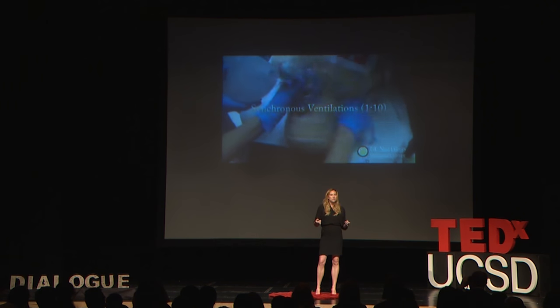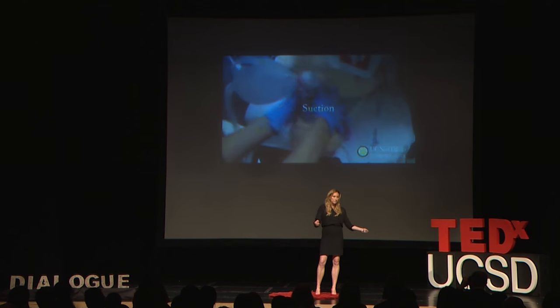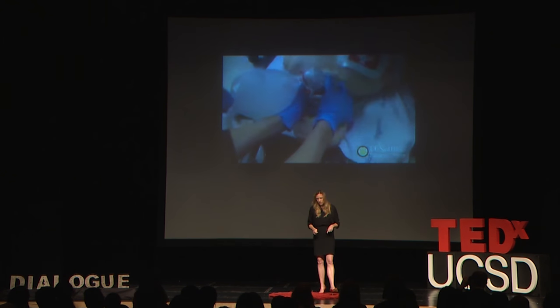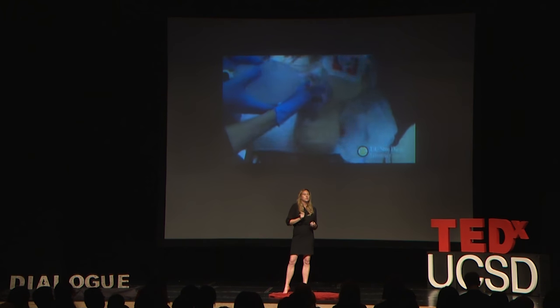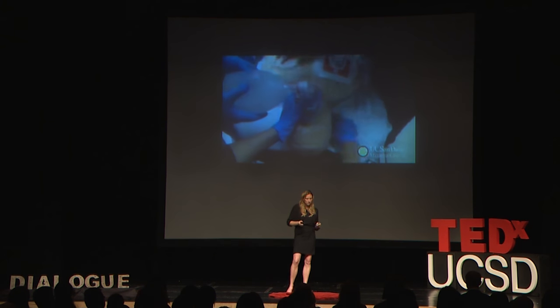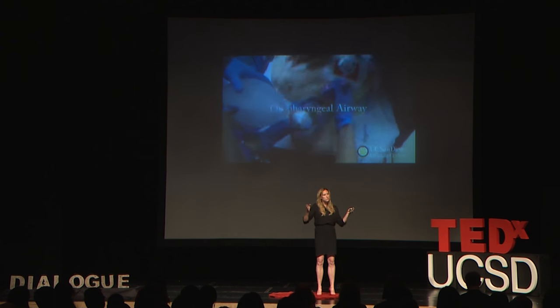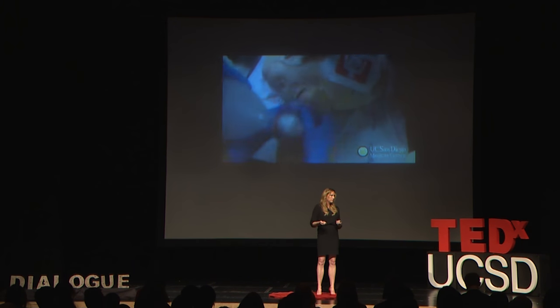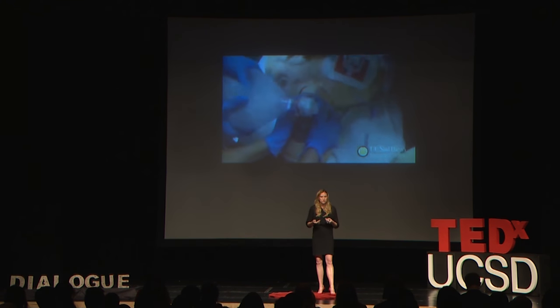Also part of circulation are lines placed in the patient's limbs, as well as their neck, and sometimes even their bone. These lines deliver fluid, blood, and special medications that centralize blood flow and cause the patient's heart to beat rapidly. The last part of circulation are defibrillator pads placed on the patient's chest, which can send electricity through the heart in an attempt to reset the electrical system — kind of like trying to reboot a computer.